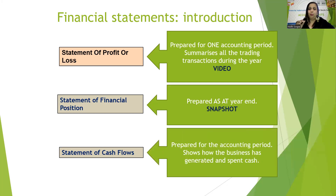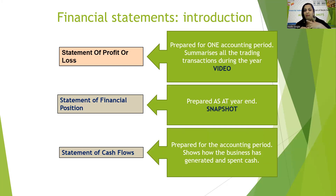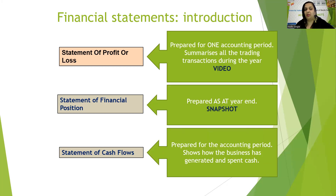Finally, you prepare the statement of cash flows, also for one accounting period of 12 months. It shows how the business has generated cash and where it has actually spent its cash — the inflow and outflow of cash from the business. These are the three financial statements which any accountant will need to prepare.